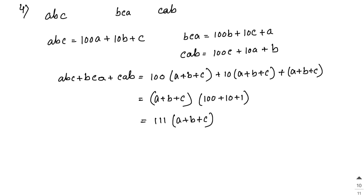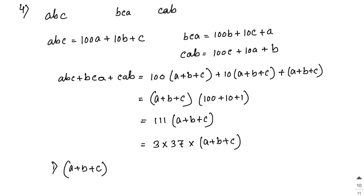We can also write 111 as 3×37. So: dividing the sum by 111 gives a+b+c; dividing by a+b+c gives 111; and dividing by 37 gives 3(a+b+c).